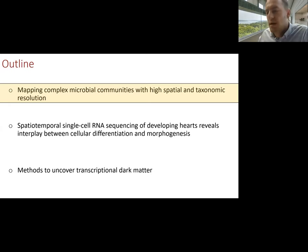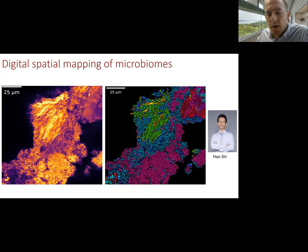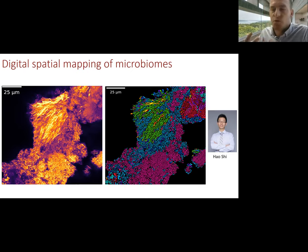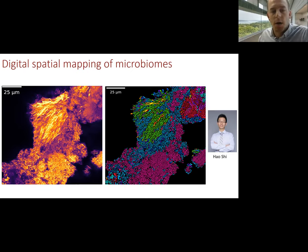I'd like to start by introducing a technology we've recently developed to map complex microbial communities with high spatial and taxonomic resolution. This is really the graduate work of Hao She, a very talented graduate student who will graduate next month. She developed this tool because she was interested in studying microbiomes and wasn't satisfied with available techniques. For example, DNA sequencing-based approaches are very powerful for creating lists of species that exist in complex microbiomes, but they destroy all the spatial information in the samples. We were interested in studying spatial interactions between microbes within a microbiome, and also between microbes and the host.